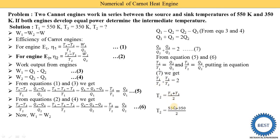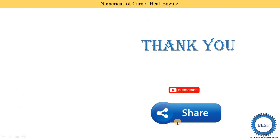Substituting T1 = 550K and T3 = 350K: T2 = (550 + 350) / 2 = 900 / 2 = 450 Kelvin. So the intermediate temperature T2 is 450 Kelvin.